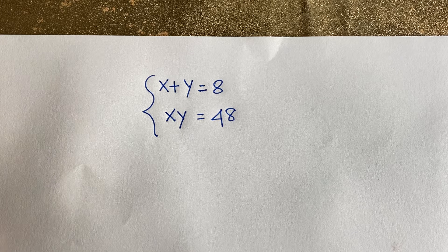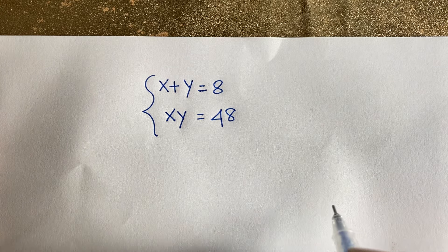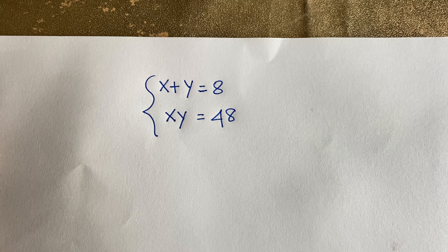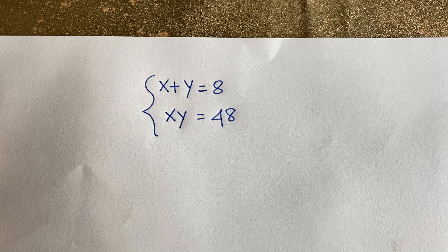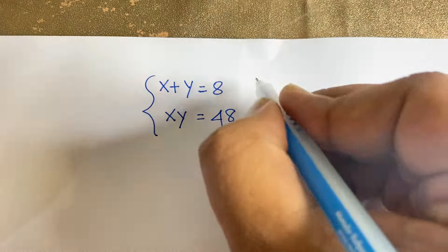Hello everyone. In this video we have solved this German Math Olympiad question: x plus y is equal to 8, x times y is equal to 48. And here x times y is equal to what? How to solve this question.